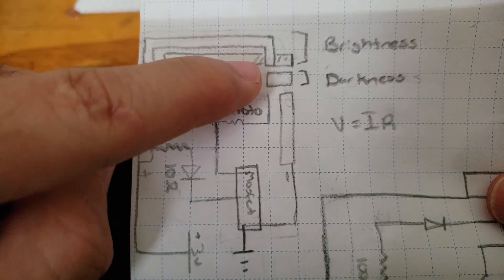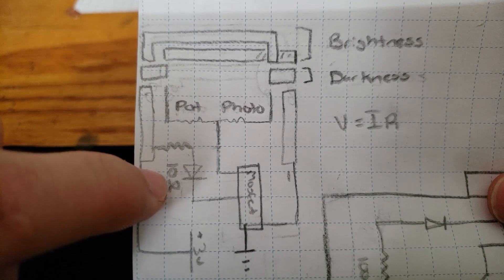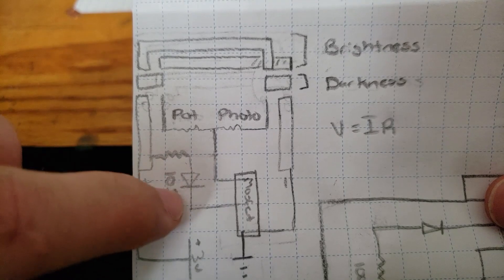On the other hand, if the potentiometer is connected to ground and the photoresistor is connected to positive, this will detect the brightness. And so if it's bright, the LED will turn on.